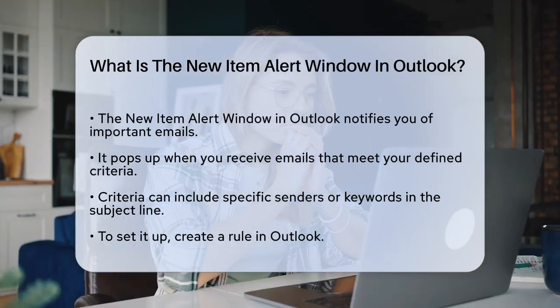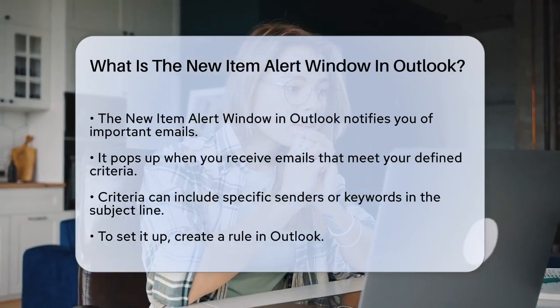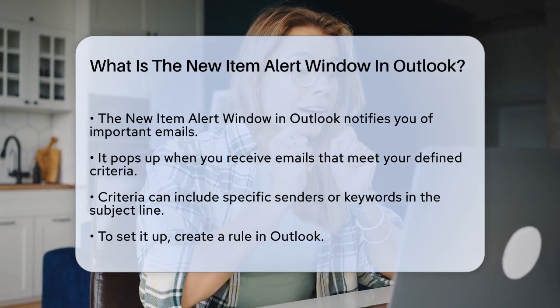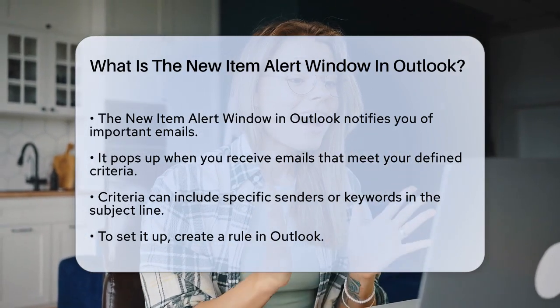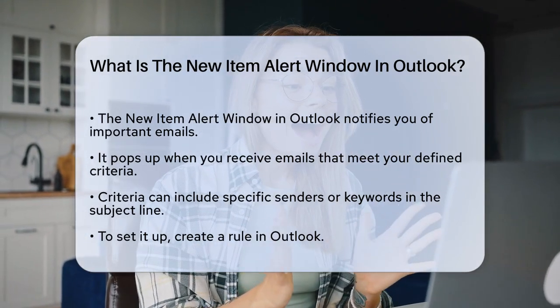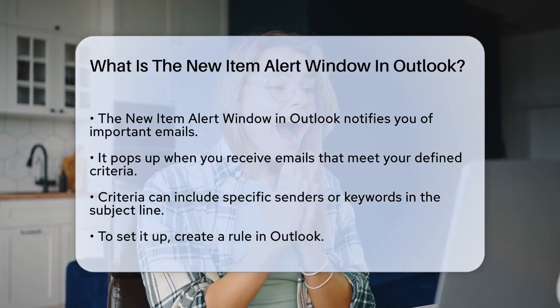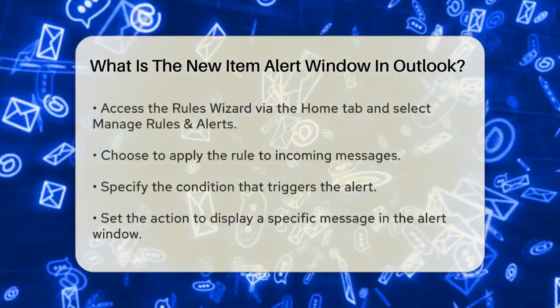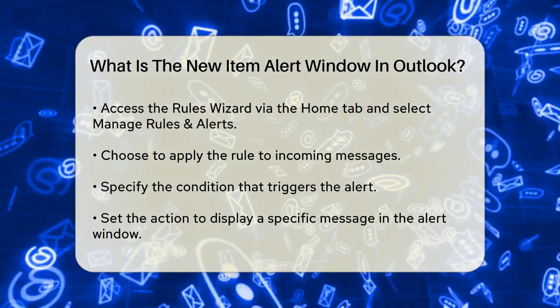To set this up, you need to create a rule in Outlook. Click the Home tab, then click on Rules in the Move group, and select Manage Rules and Alerts. This will open the Rules Wizard, where you can create a new rule.